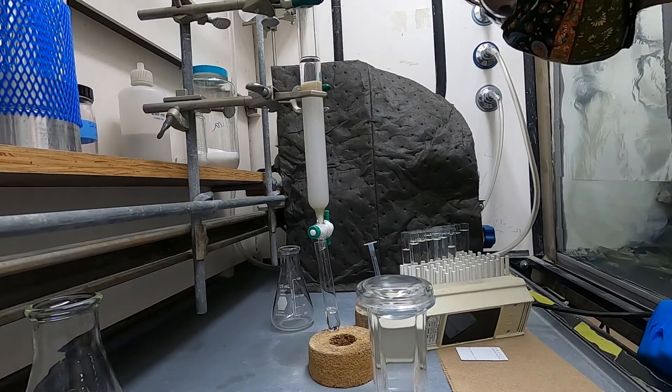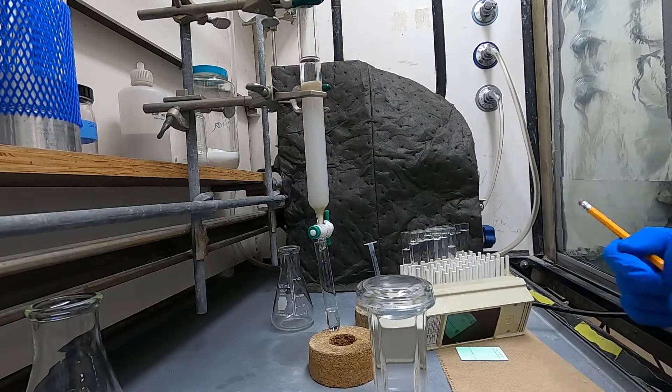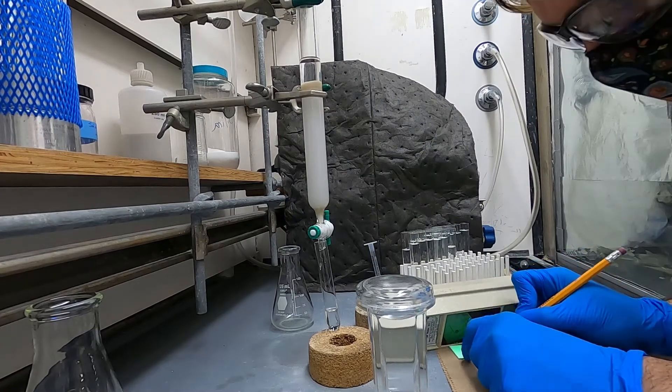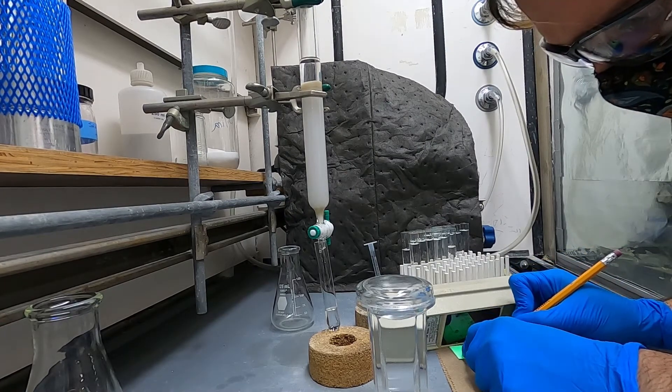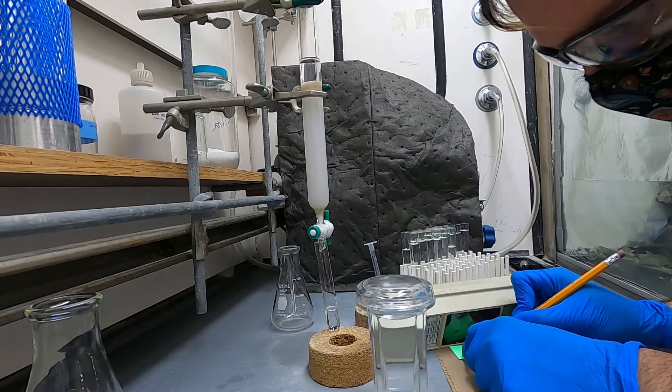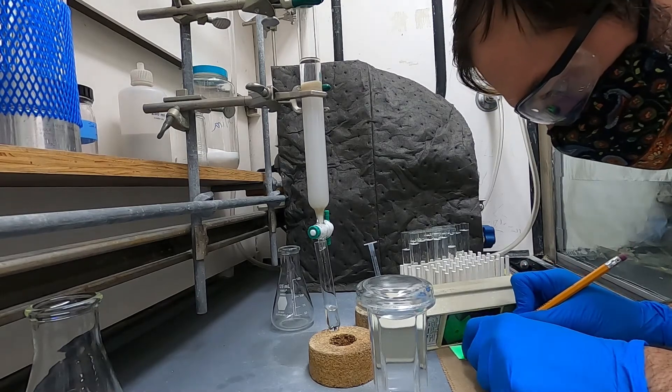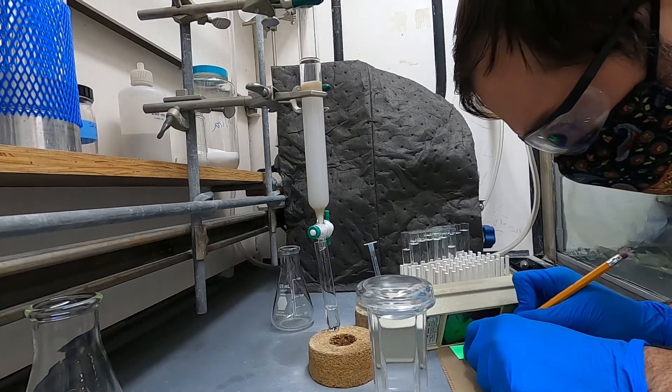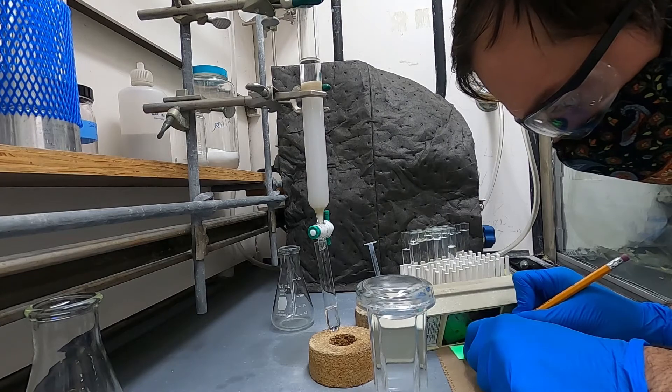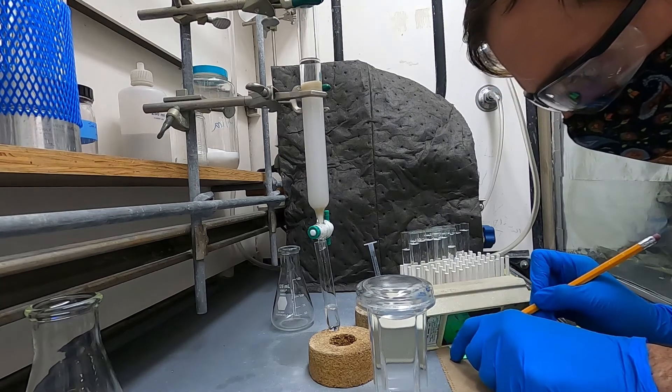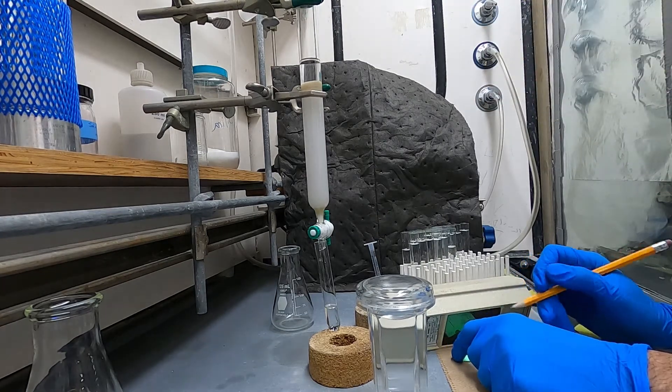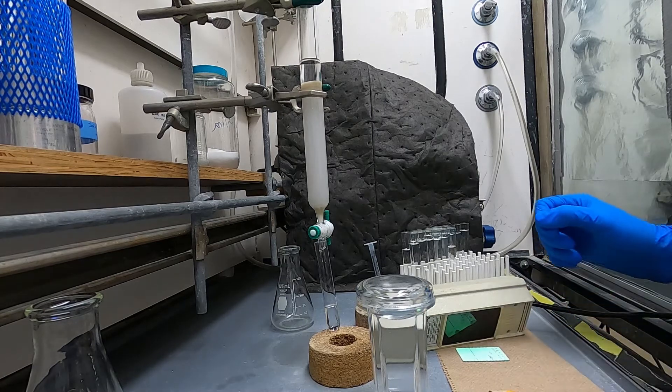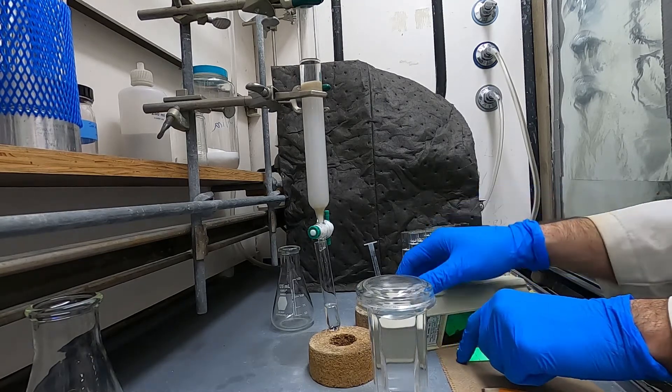Once you've got your TLC plate spotted and developed you will visualize it. Most things if you have a UV handle it's really easy to just visualize by UV. Sometimes you'll need to use a specialized stain that we have in every lab so just figure out what's appropriate for the thing you're trying to isolate and use that visualization method appropriately.